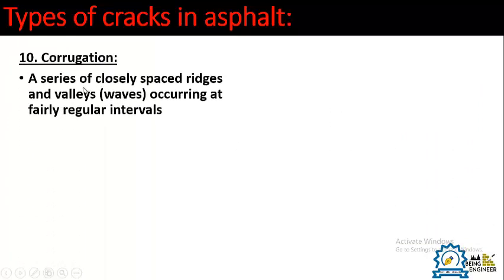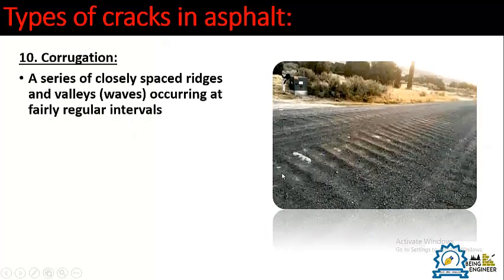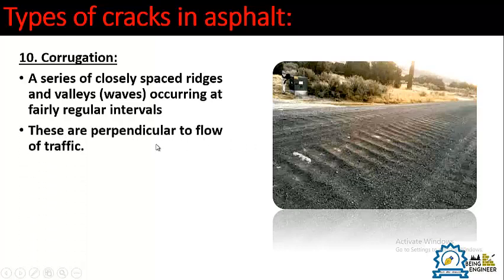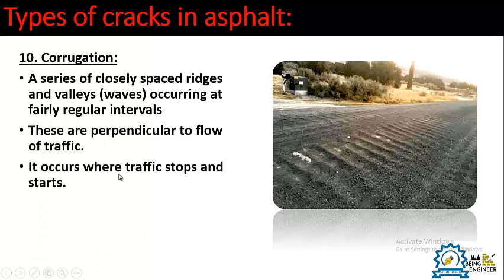Number ten is corrugation — a series of closely spaced ridges and valleys or waves occurring at fairly regular intervals. As you can see in the picture, these waves form perpendicular to the flow of traffic. Corrugation occurs at locations where traffic stops and starts.